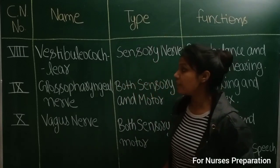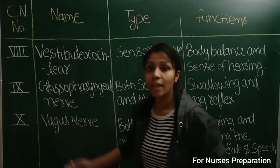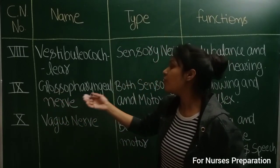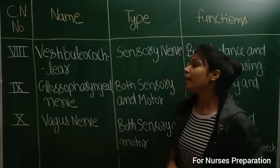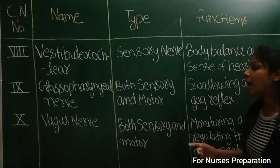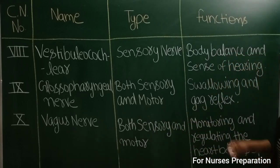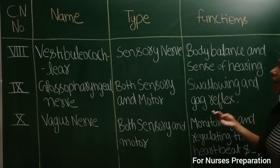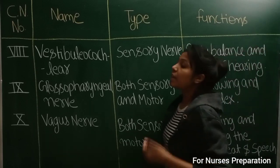Our next nerve is number ten, that is glossopharyngeal nerve and it is both sensory and motor in nature. Their functions are swallowing and gag reflex.